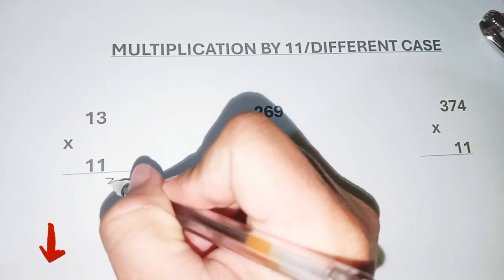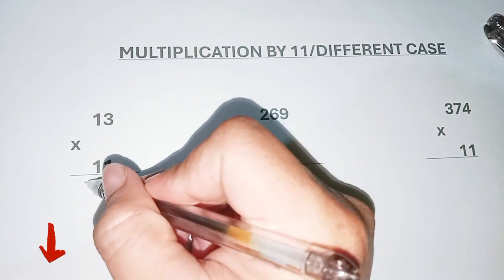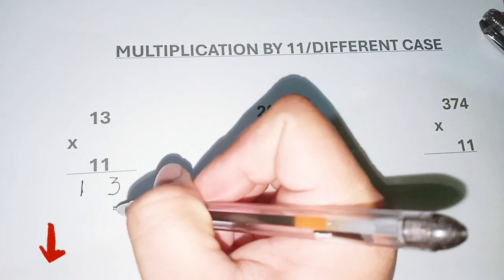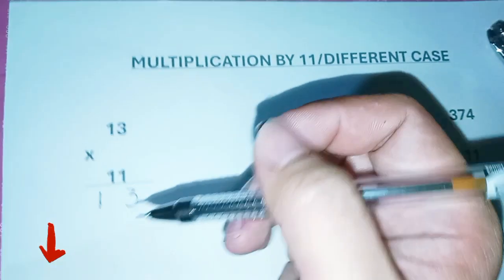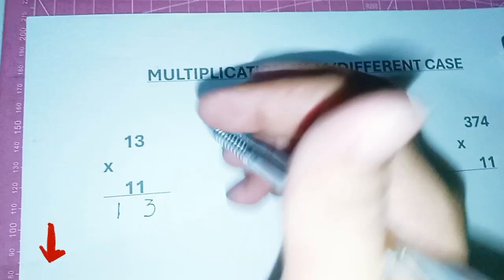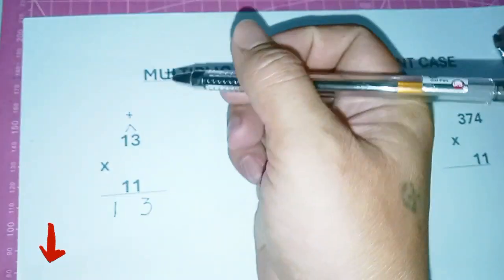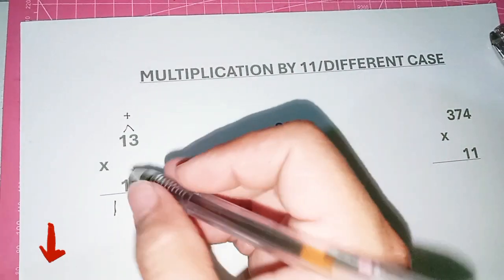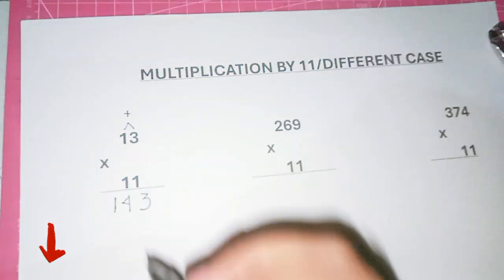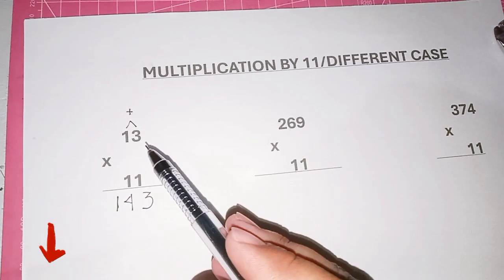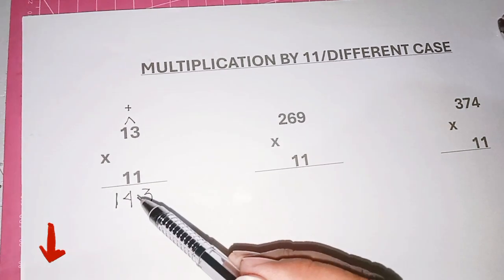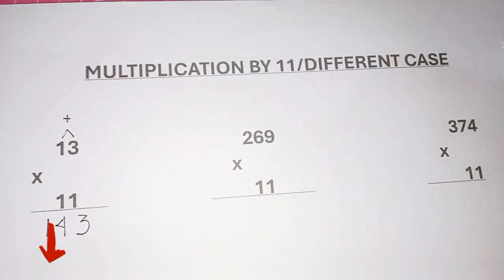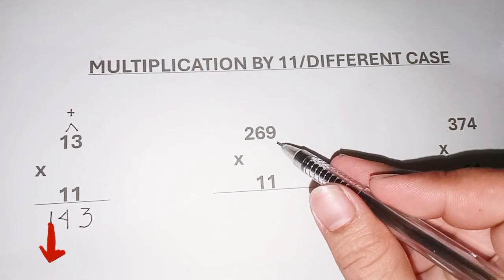For 13 times 11, copy the three and also copy the one, and put a space between them. The number in that space is the sum of one and three, which gives you four. So the answer for 13 times 11 is 143. Just copy the digits and put their sum in the middle.